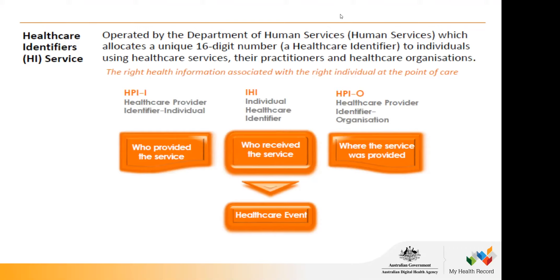Each individual practitioner will already have been assigned an HPII if they are AHPRA registered — it's linked to AHPRA registration but is not your registration number. If you're not an AHPRA registered health practitioner, you can still get an HPII through a slightly different process. The third important number is the individual's healthcare identifier, which identifies who received the service and is linked to the patient's Medicare number. All three numbers link together to record what happened in a healthcare event and allow it to be uploaded to My Health Record.